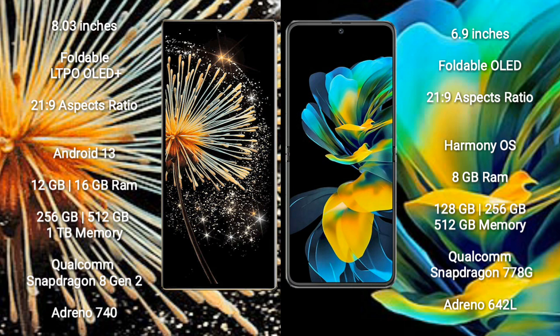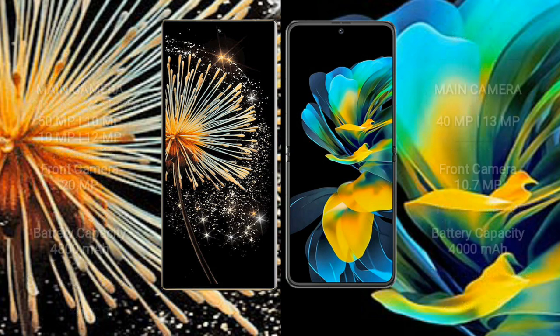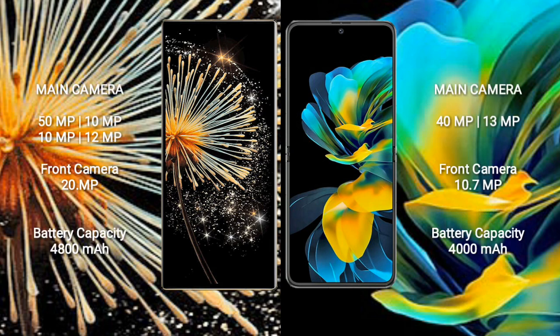Huawei Pocket S comes with 8GB RAM, and 128GB, 256GB, or 512GB internal storage. It features a Qualcomm Snapdragon 778G processor and Adreno 642L GPU.